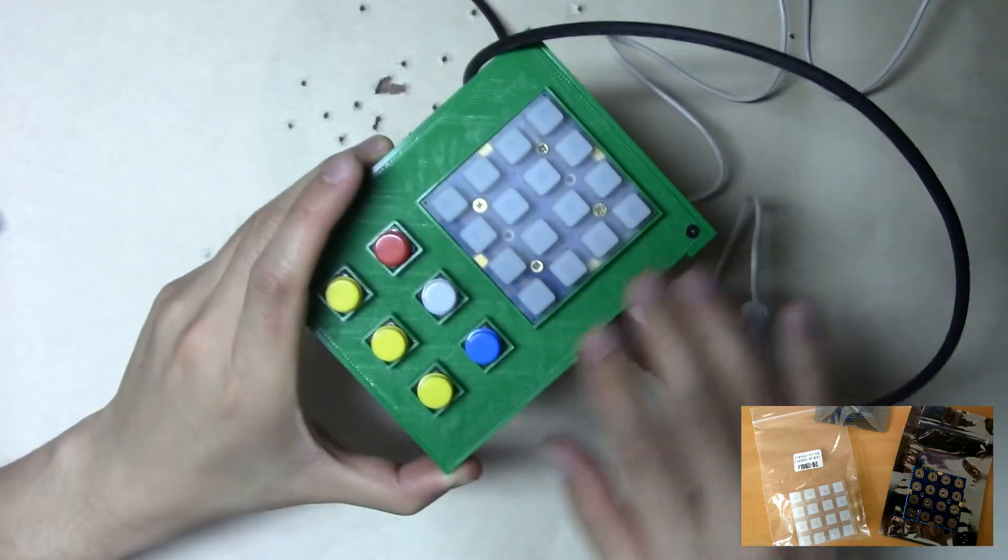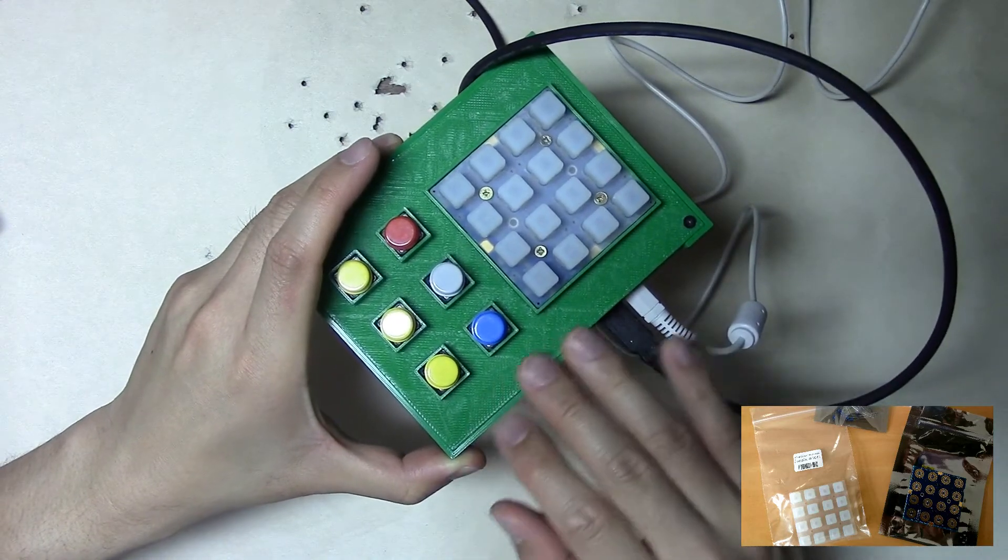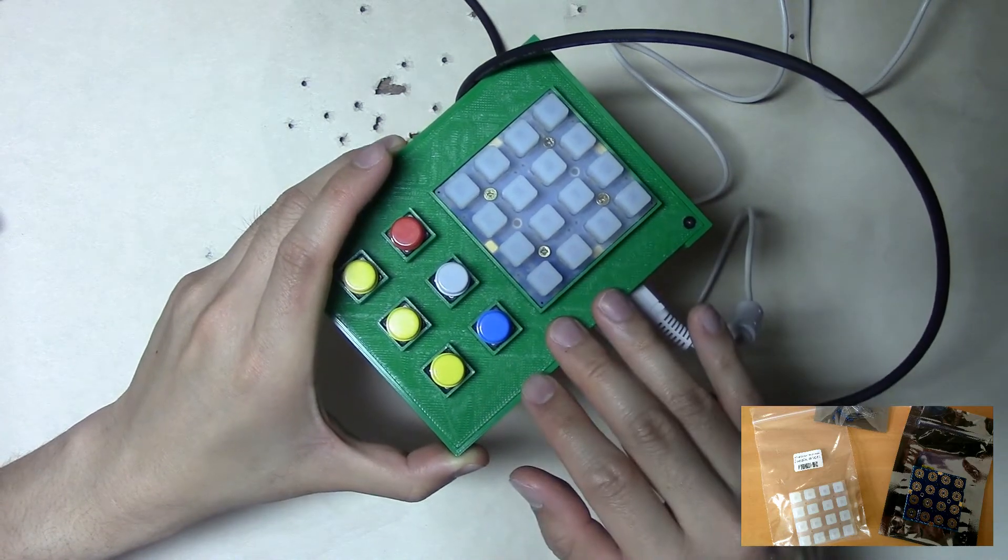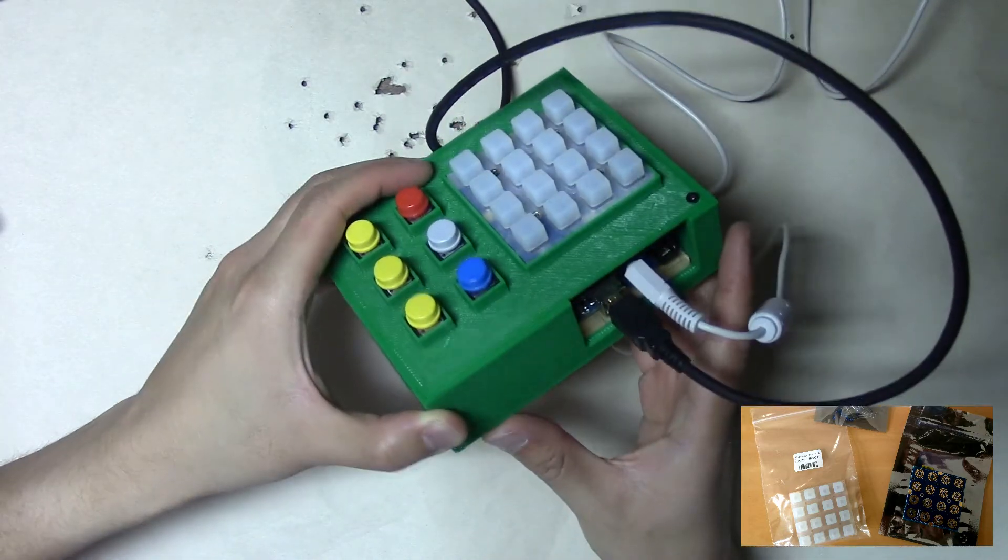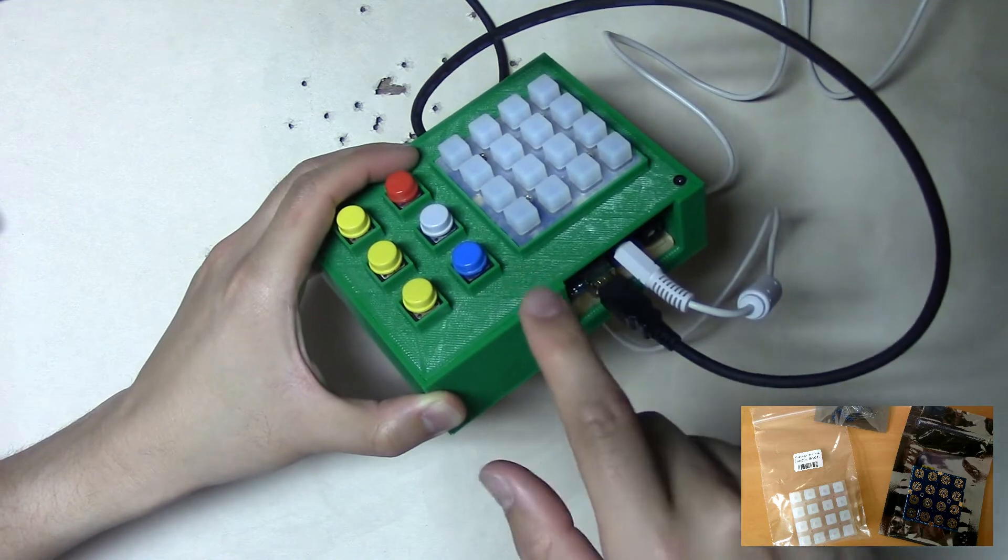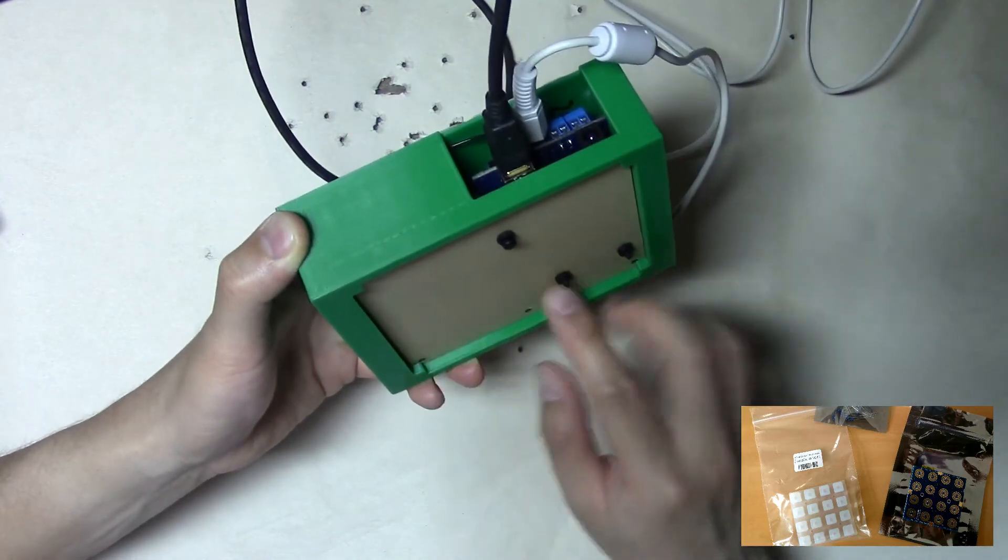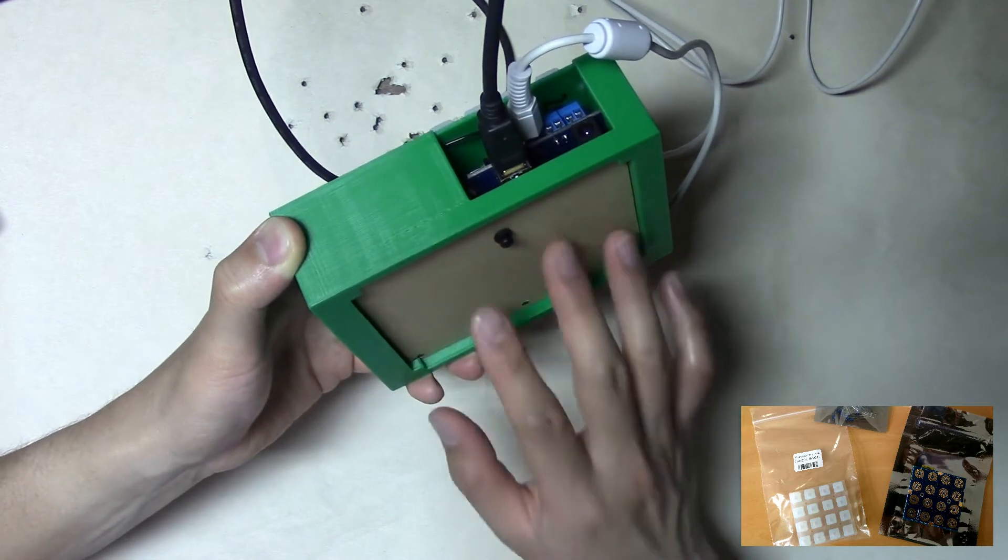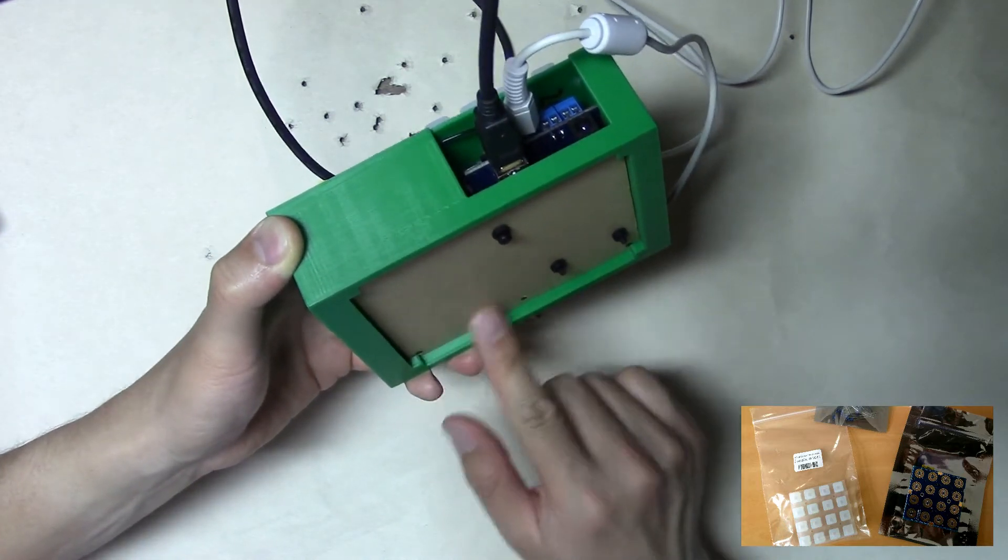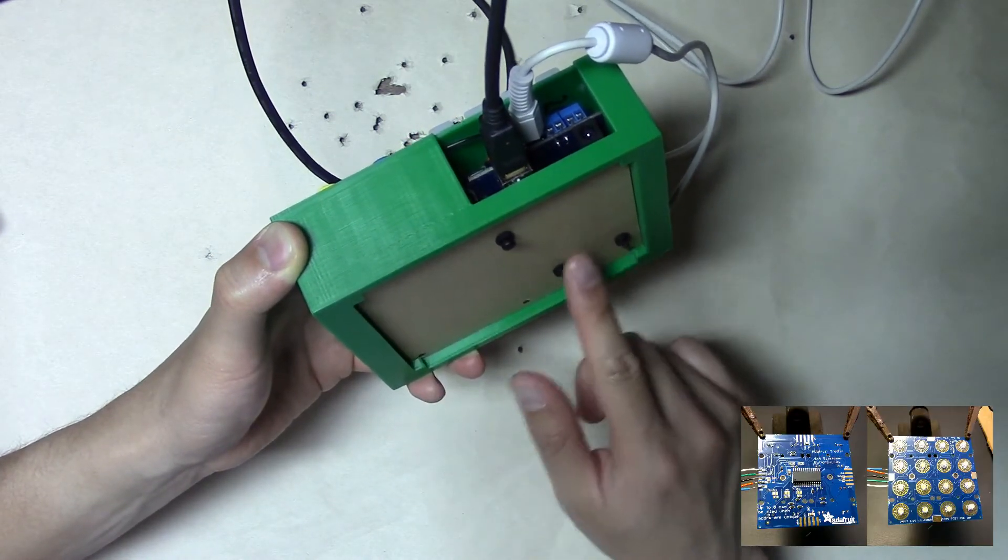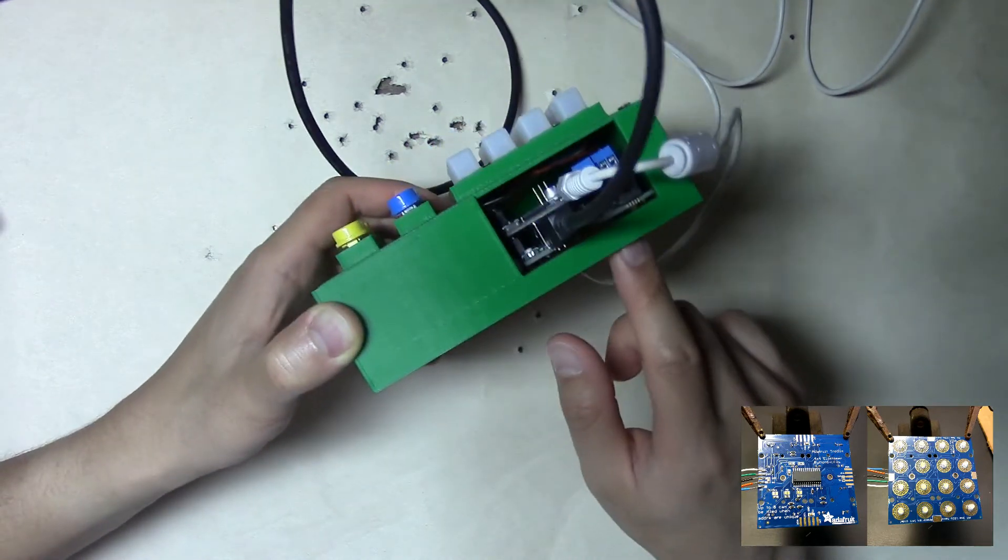This enclosure is something I designed in Tinkercad after many versions. It consists of a top that is jammed into an outer enclosure that completely encapsulates the beginner Arduino kit board, which has a breadboard on the left-hand side and the Arduino Uno mounted on the right-hand side.